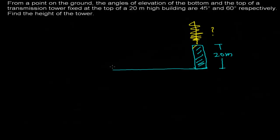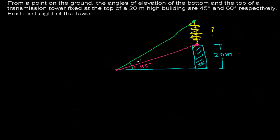We are going to watch this transmission tower from a certain point on the ground. When we look at the bottom of this tower, we got an angle of elevation of 45 degrees. But when we look at the top of this tower from the same point on the ground, we got an angle of elevation of 60 degrees.